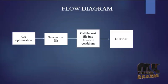Next we see the flow diagram. In the flow diagram, the optimization is GA optimization. Then save the optimized value in MAT file, then call the MAT file into the inverted pendulum pivot section.